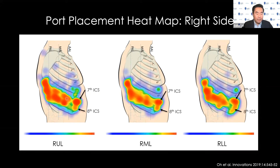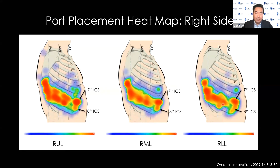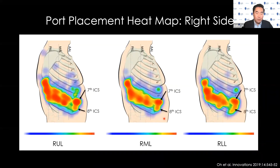For the right upper lobe, there is a split between surgeons preferring either the seventh or eighth intercostal space for the camera. For the middle and lower lobe, it becomes more consistent — almost everyone is going into the eighth, and by the lower lobe, most surgeons are placing the camera in the eighth intercostal space. The posterior port shows the greatest variability across surgeons. We concluded that most surgeons are not using external landmarks to place this port, which I'll explain further later.